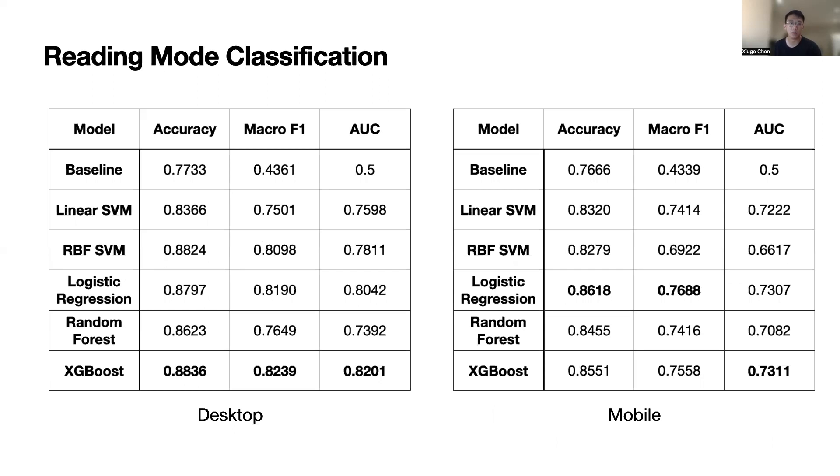We're able to achieve almost 90% accuracy in desktop and 86% accuracy in mobile. We did not explore more modernized algorithms like neural networks here because we want better interpretability and visibility over the decisions made during classification. And this is more like an exploratory study rather than an optimization study.